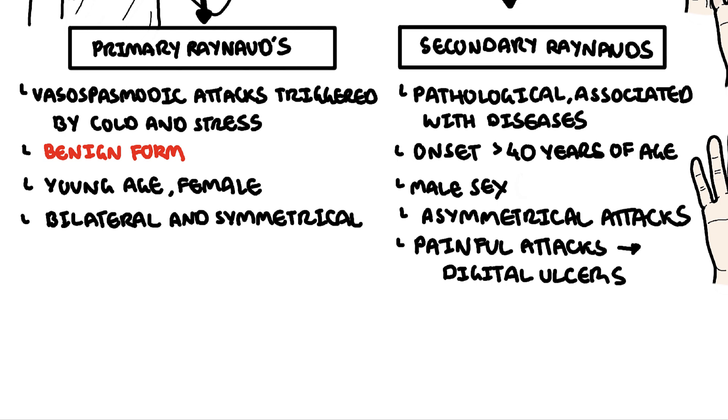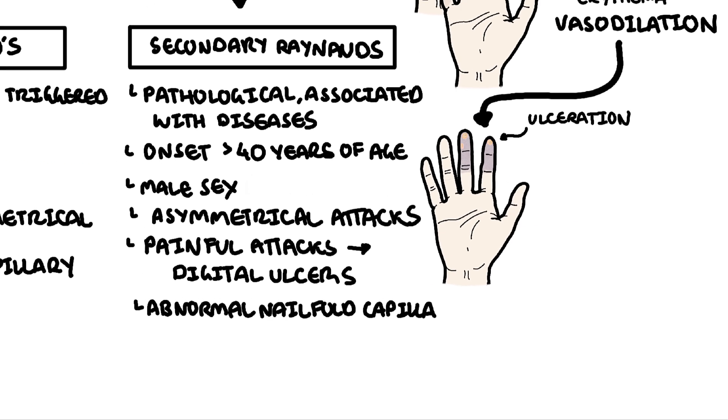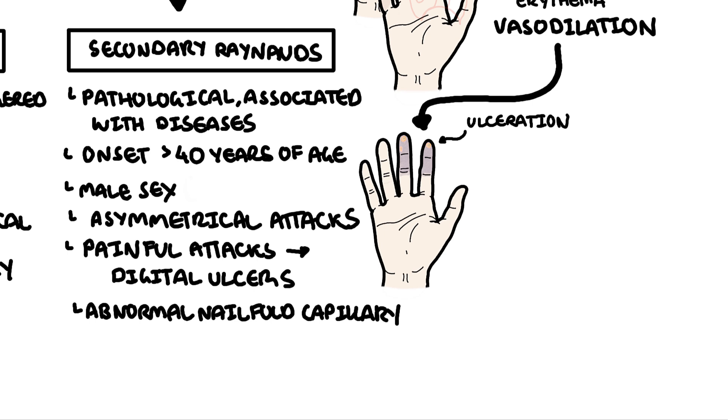Another key difference to differentiate primary from secondary Raynaud's phenomenon is by assessing the nail beds, looking at the nail bed capillaries, and this can be done using capillaroscopy. In primary Raynaud's phenomenon, there are normal nail bed capillaries, whereas in secondary, they are abnormal. Let's take a look at what a normal nail fold capillary should look like.